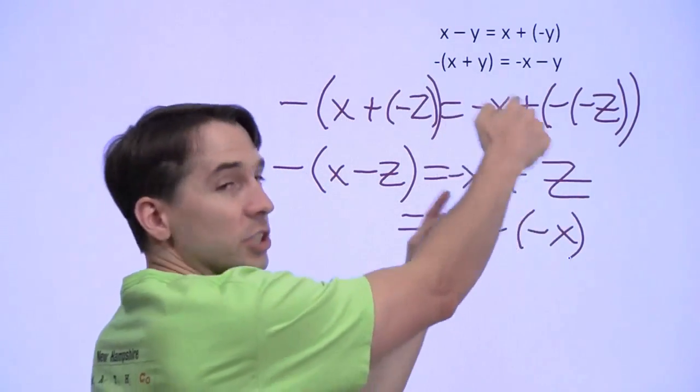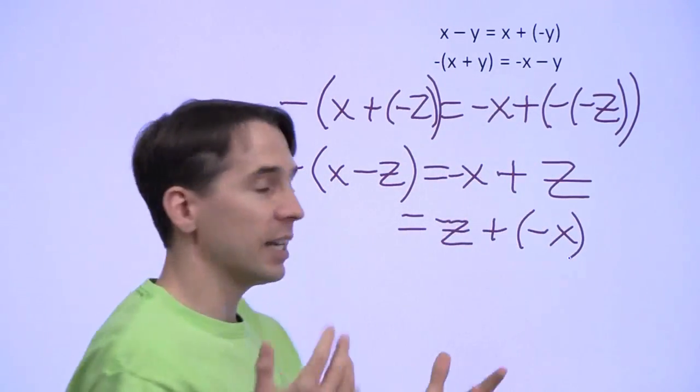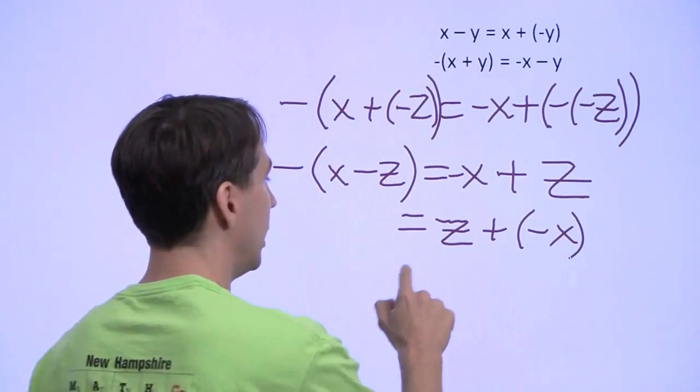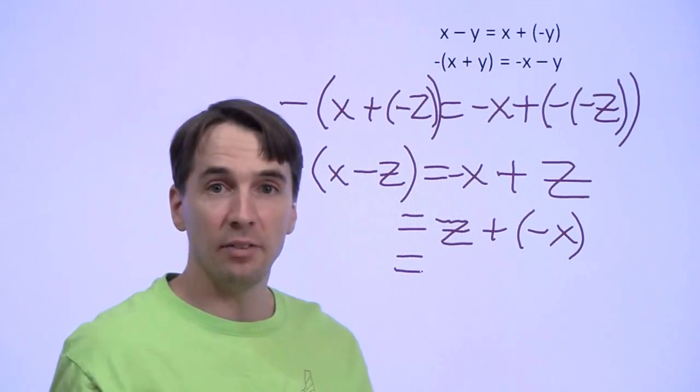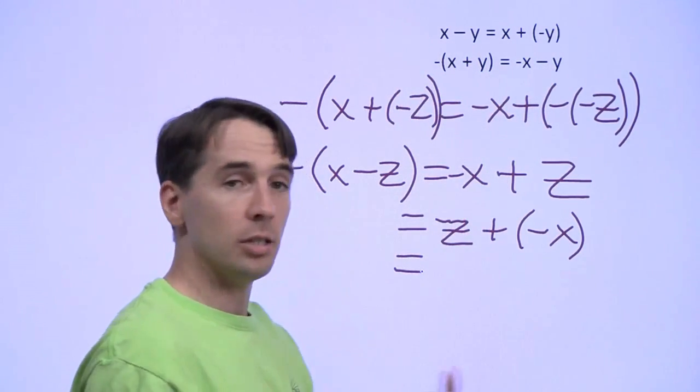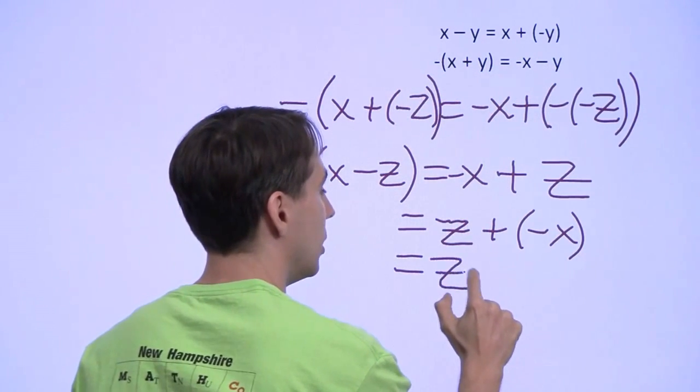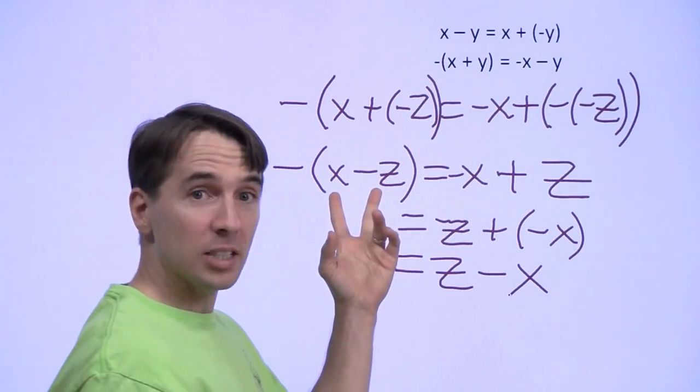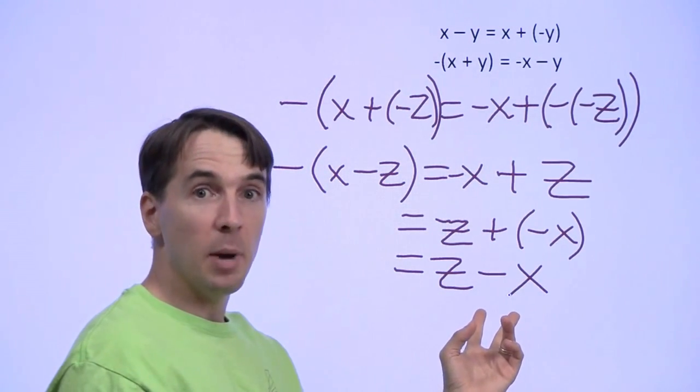All I'm doing here is switching these two. So instead of negative x plus z, I have z plus negative x. And z plus negative x, that's just subtraction. You add the negation, that's the same thing as subtraction. That's z minus x. So the opposite of x minus z is z minus x.